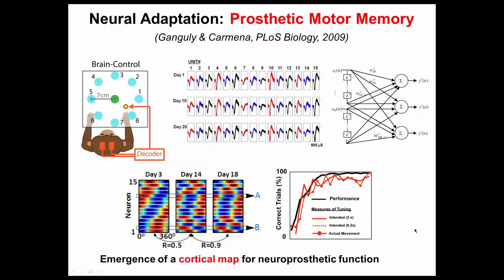Another way of doing BMI is by getting the brain to learn the specifics of the decoder, or transform algorithm, that is being used to translate neural activity into motor commands. It has been shown that if we keep the same neural recordings throughout the length of the experiment and pair those with the same decoder, the primate brain is able to learn an inverse model of these decoders — in other words, it learns something about these parameters. This is shown in what we refer to as a cortical map for neuroprosthetic function, which you see here in late learning compared to early learning. Early versus late shows that the maps are very different, but they become very similar thereafter.